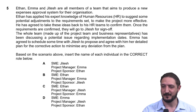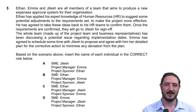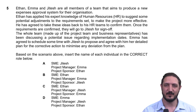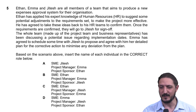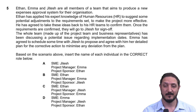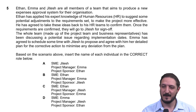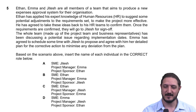Emma is the project manager in this context. She's planning and looking at scheduling — it's regarding implementation dates, which is when the system is going to be implemented into the business after development. So the answers are: Ethan is the Subject Matter Expert, Emma is the Project Manager, and Jitesh is the Project Sponsor.